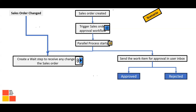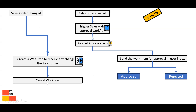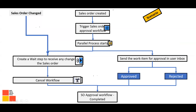If the creator changes the sales order, the event defined in the Wait step gets triggered and the workflow is cancelled using Process Control. So you define a step: when this event is triggered, cancel the workflow. Once the workflow is cancelled — or if approval or rejection happened — the approval workflow is completed, which is the desired outcome.